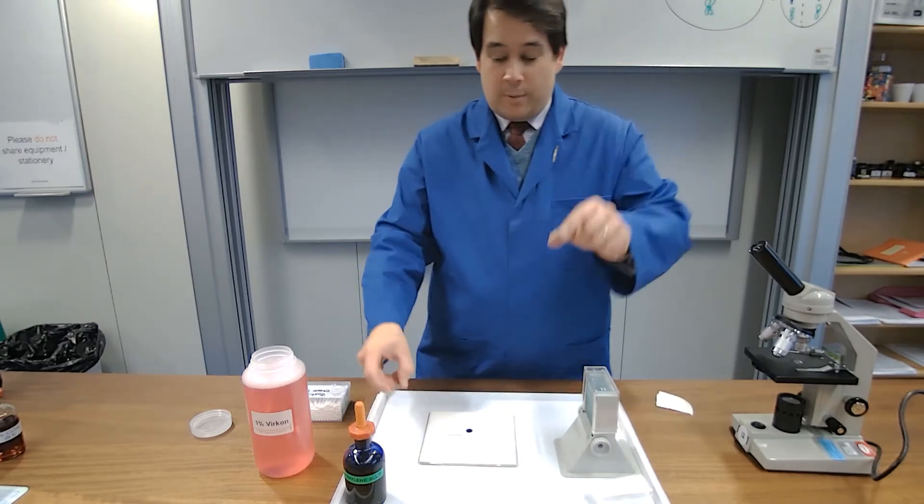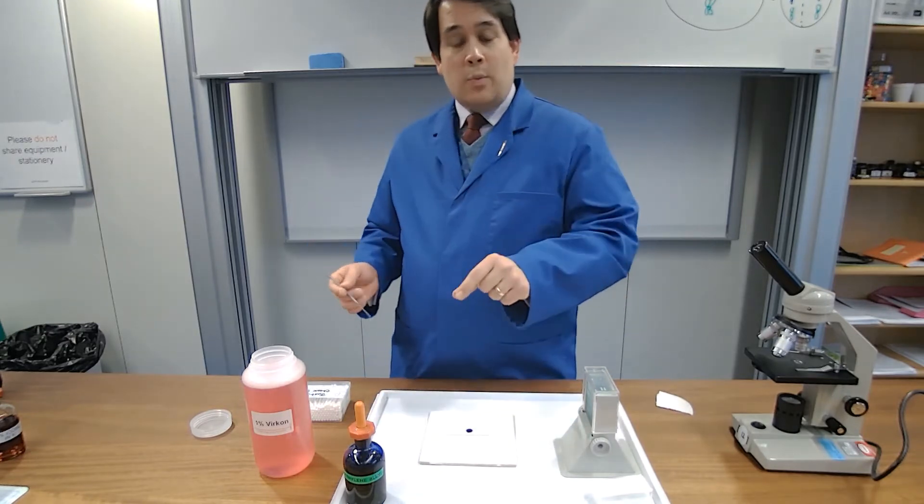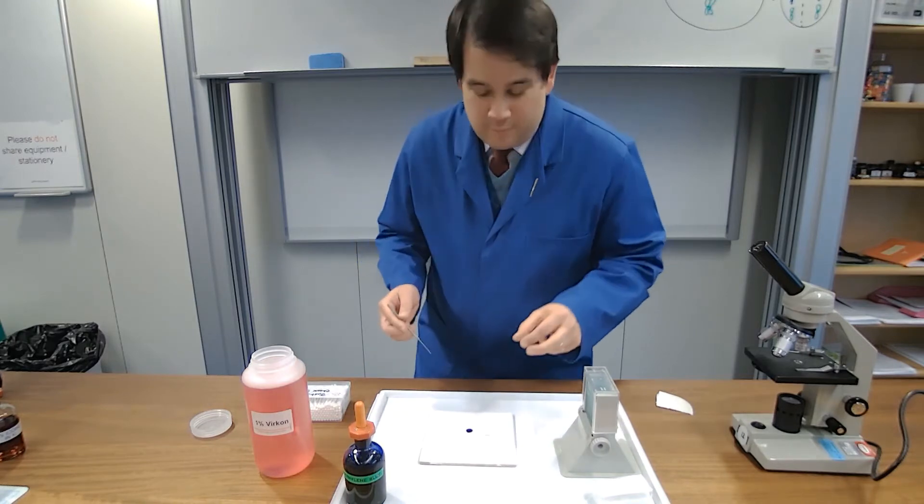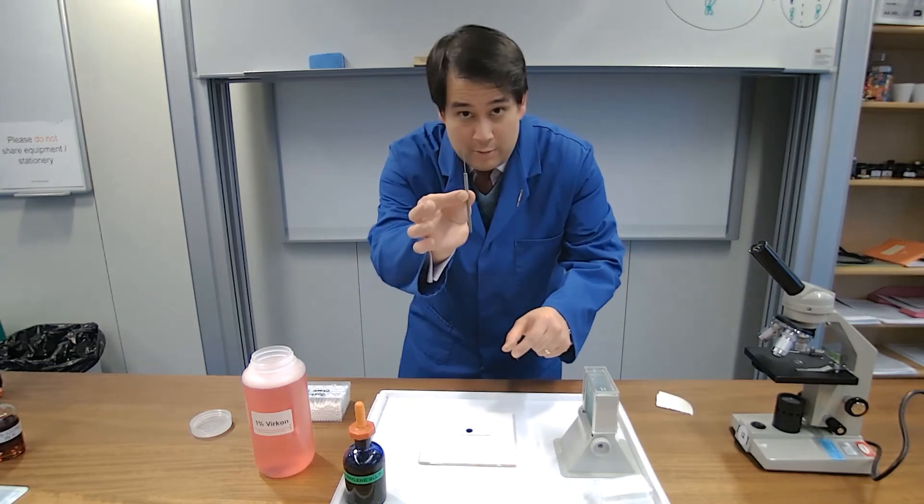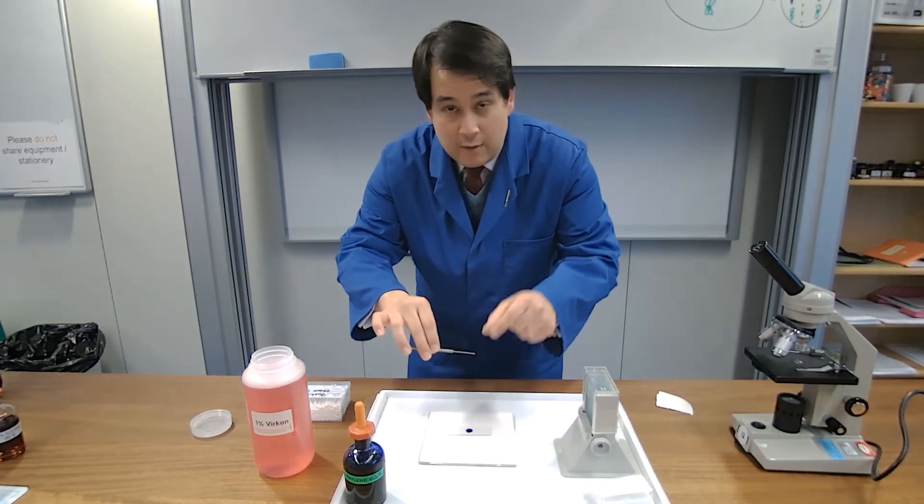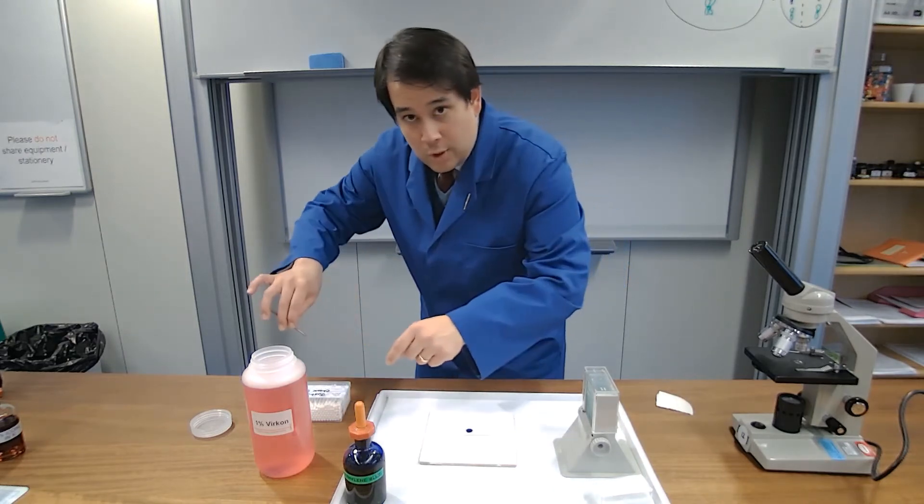Now, you need to be careful about the cover slip. If it goes on straight away, you can add some air bubbles which will make things look a bit more difficult. So what we're going to use is this technique where we use a mounted needle to rest the cover slip on and then we lower it slowly onto the bubble.